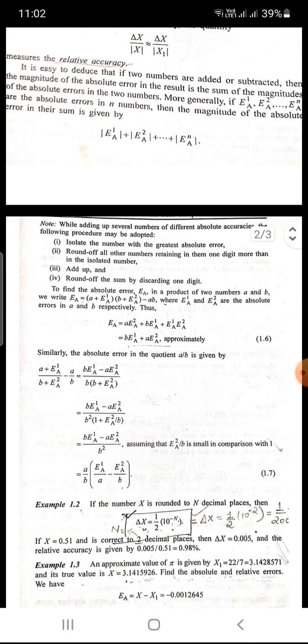Second, round off other numbers retaining in them one digit more than in the isolated number. Third, add up. And fourth, round off the sum by discarding one digit.